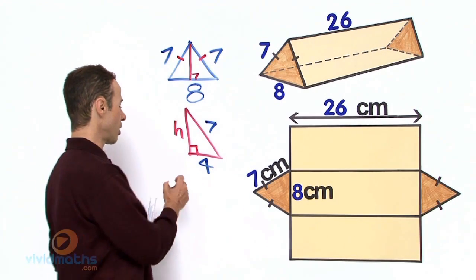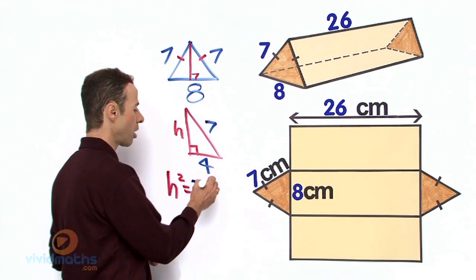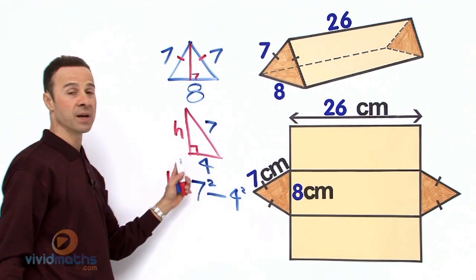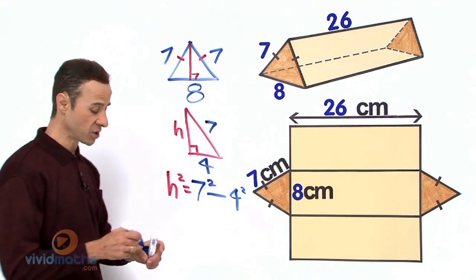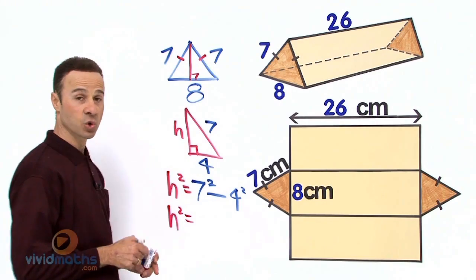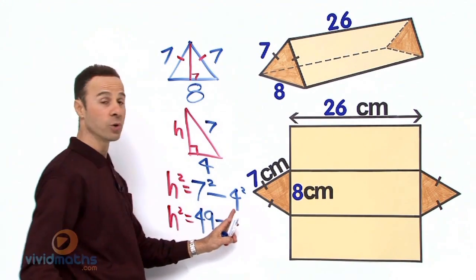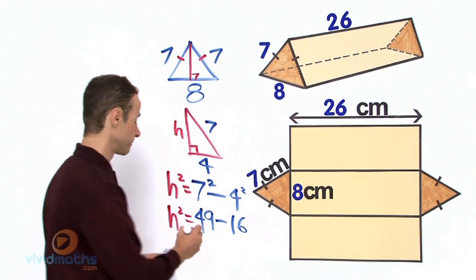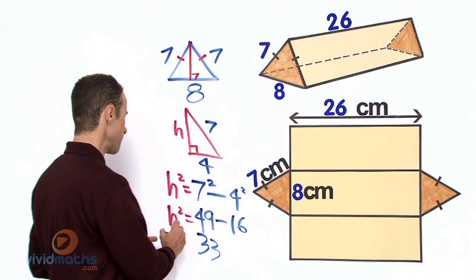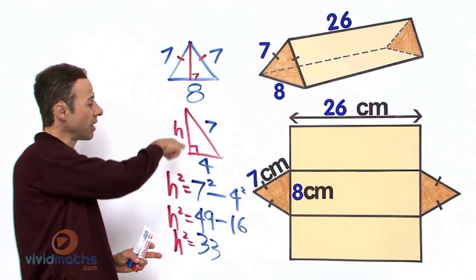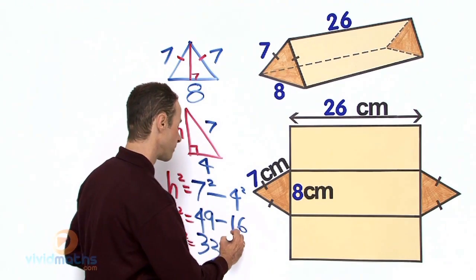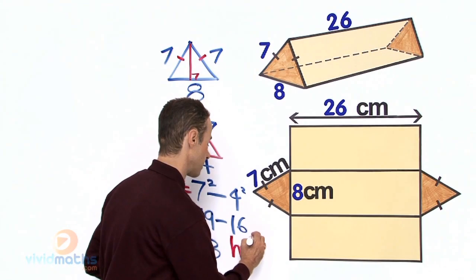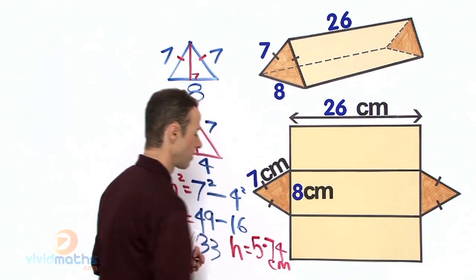So let's work this out now. The height squared equals the hypotenuse squared minus the bottom length squared. So that is going to be 7 squared minus 4 squared. There is our hypotenuse and there is our base there, 4. Let's subtract them. So the height squared is 49 take away 4 squared, which is 16. That means 49 minus 16 equals 33. So the height squared is 33. Let's square root that so we can get the actual height. That height right there is what we are after so we can get that area, and that height is the square root of 33, which is 5.74 to 2 decimal places, 5.74 cm.